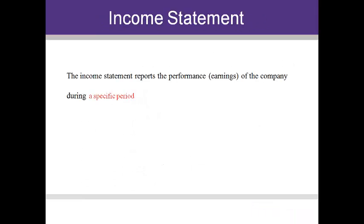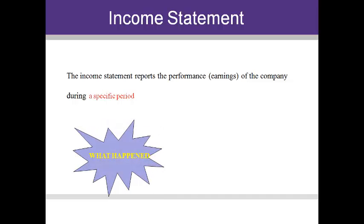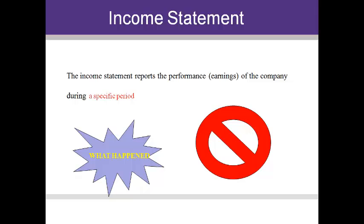The income statement is designed to tell investors and creditors about the earnings of the company that occur from operating the business for a certain period of time. The income statement is a report of what happened during the period. It is not a report of the cash received or paid during the period.